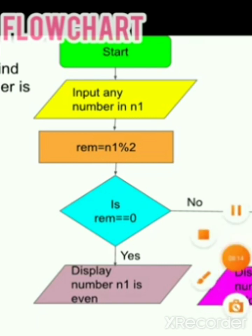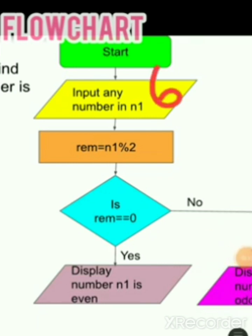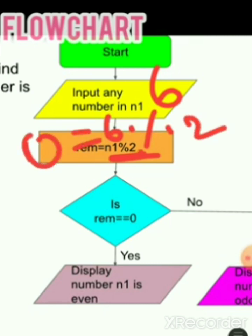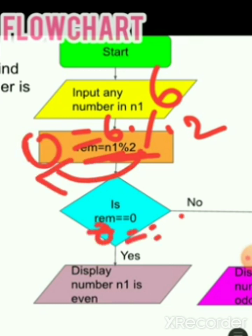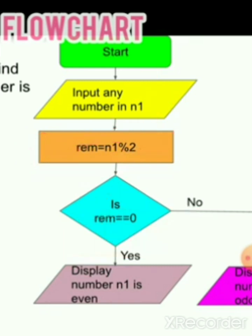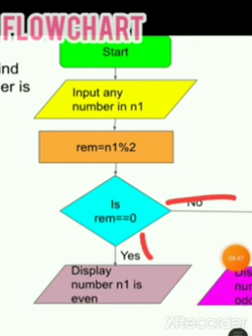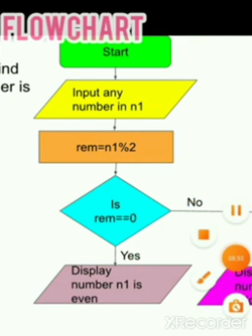If we take n1 = 6, then 6 % 2 gives remainder 0, which gets stored in rim. So rim = 0, and checking 0 == 0 gives 'Yes' — the condition is true. It will go to the yes branch and display 'number is even.' You can draw the arrow on either side, but you must label it properly.